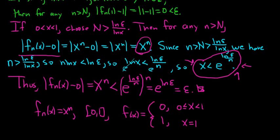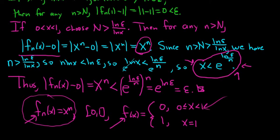The convergence is not uniform, because this is a sequence of continuous functions, and if the convergence were uniform, the limit would also have to be continuous. But the limit function clearly has a jump discontinuity at x = 1, so it is not continuous. Therefore we only have point-wise convergence on this interval.